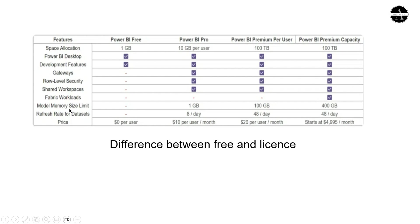For memory size limits: the Pro version has a 1 GB limit, Premium Per User has 100 GB, and Premium Capacity has 400 GB. For refresh frequency — when uploading new data you need to refresh — the free version has no scheduled refresh. The Pro version has 8 refreshes per day, while both Premium Per User and Premium Capacity have 48 refreshes per day.